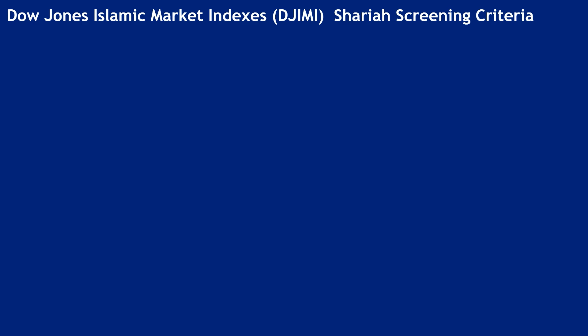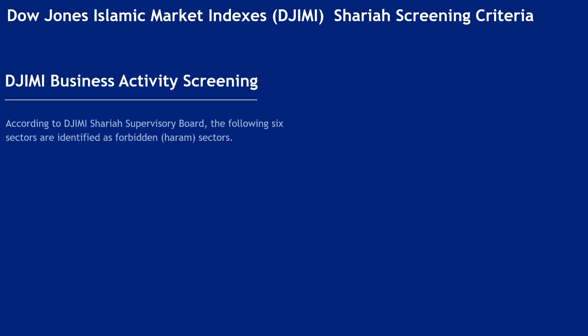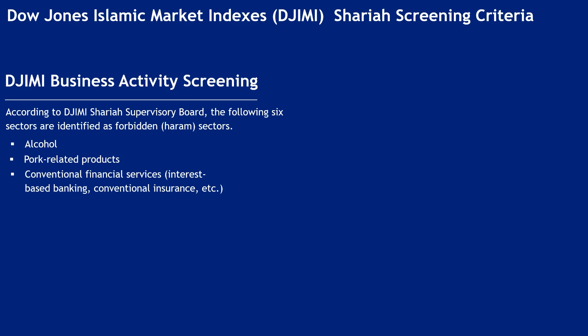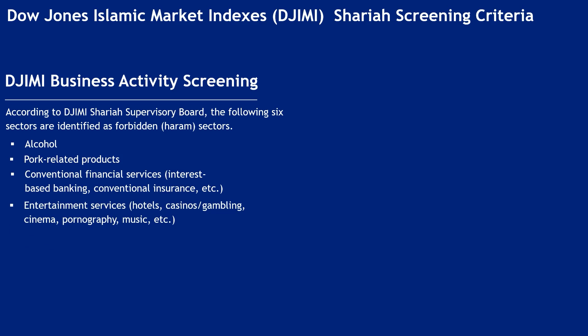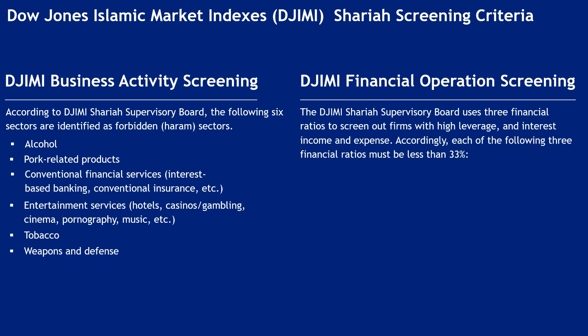Dow Jones Islamic Market Index (DJIMI) Shariah Screening Criteria — Business Activity Screening. According to the DJIMI Shariah Supervisory Board, the following six sectors are identified as forbidden sectors. The board uses three financial ratios to screen out firms with high leverage and interest income and expense, each of which must be less than 33%.